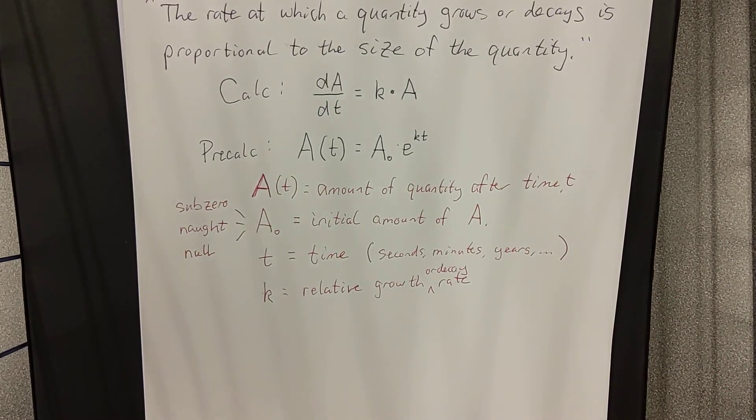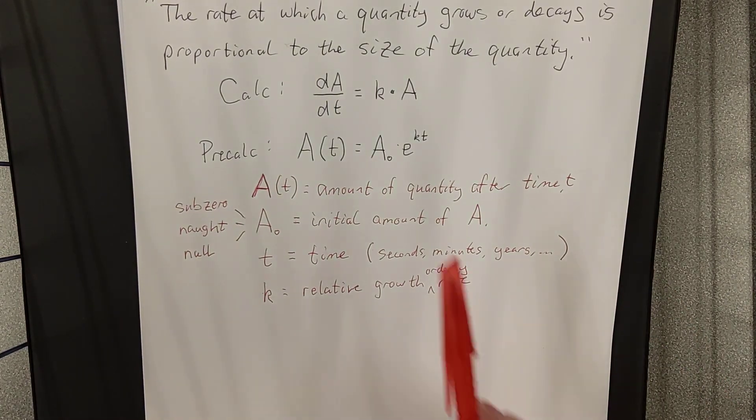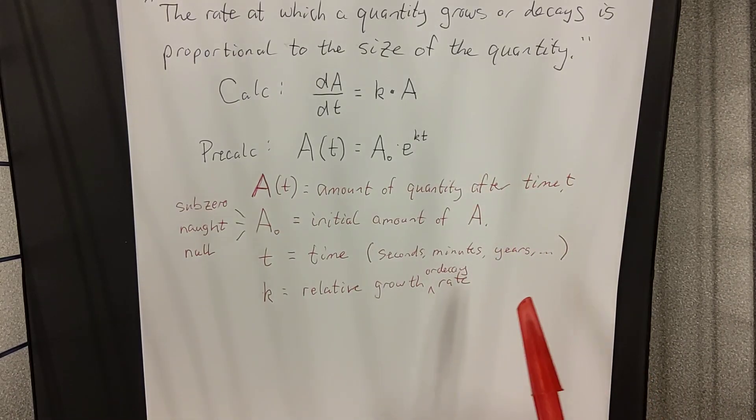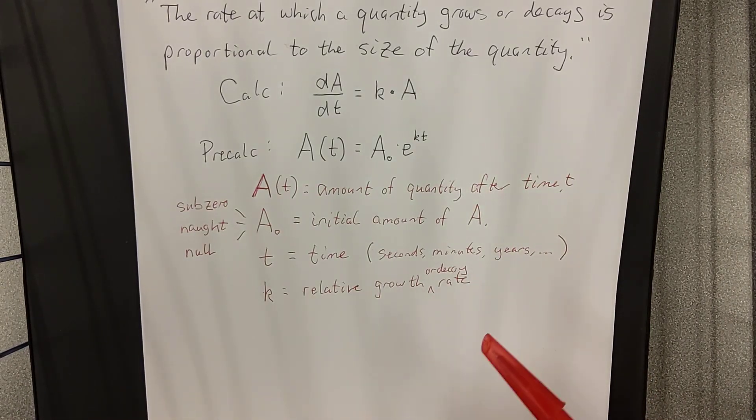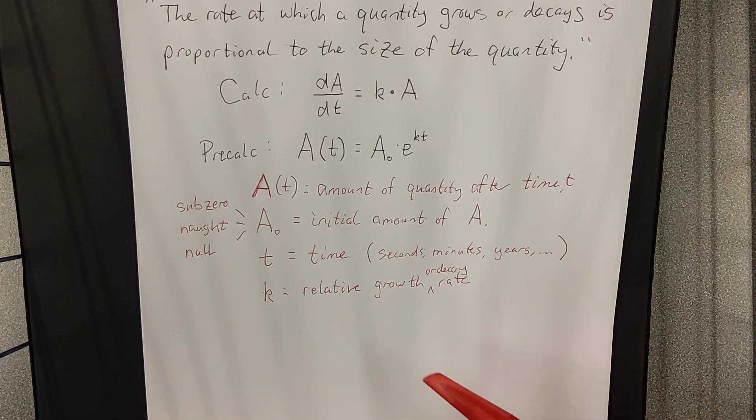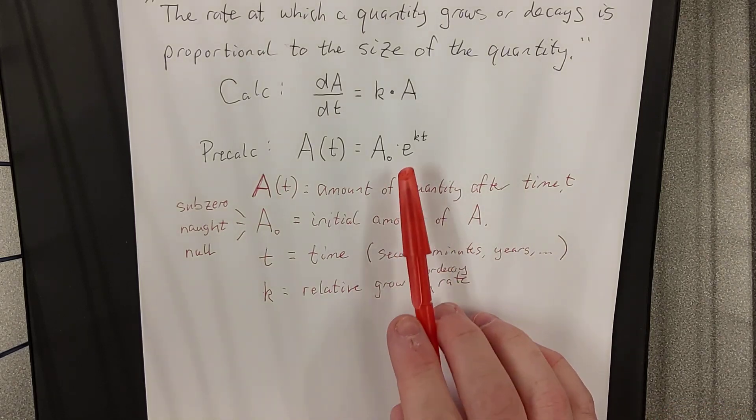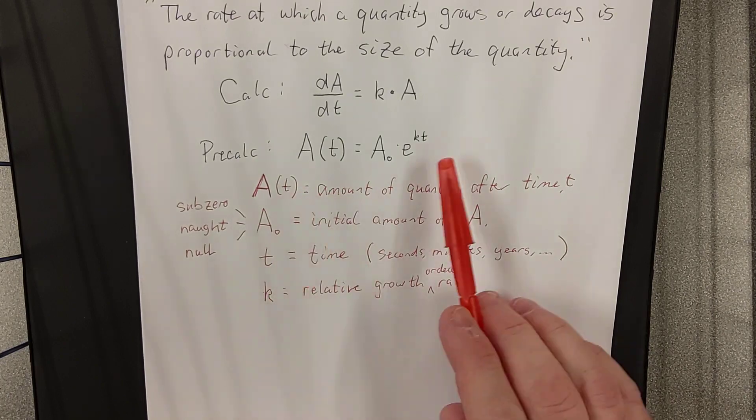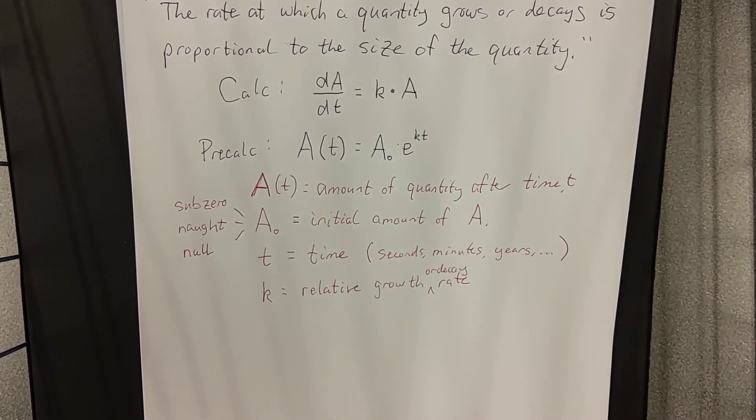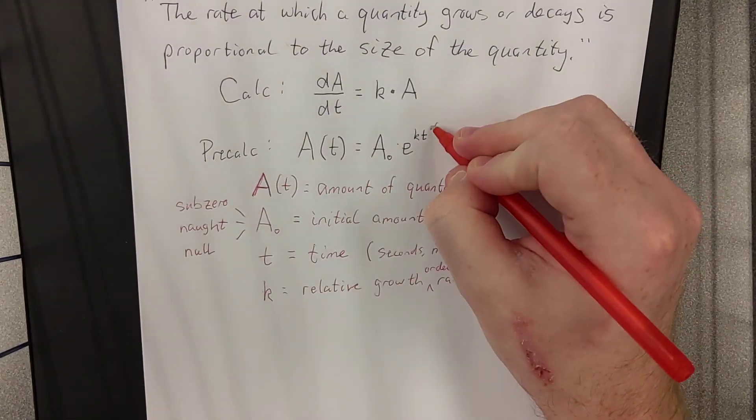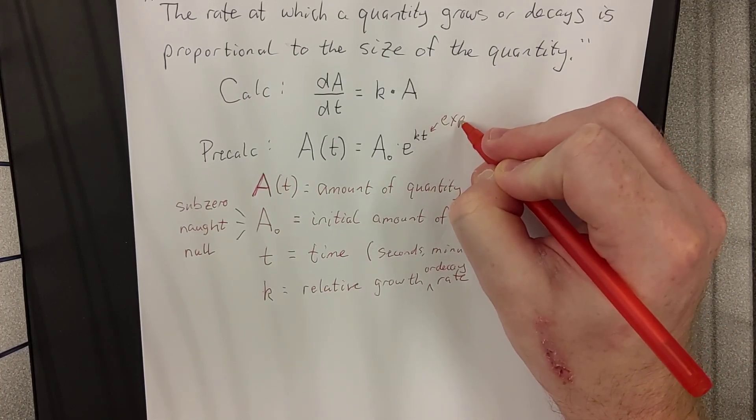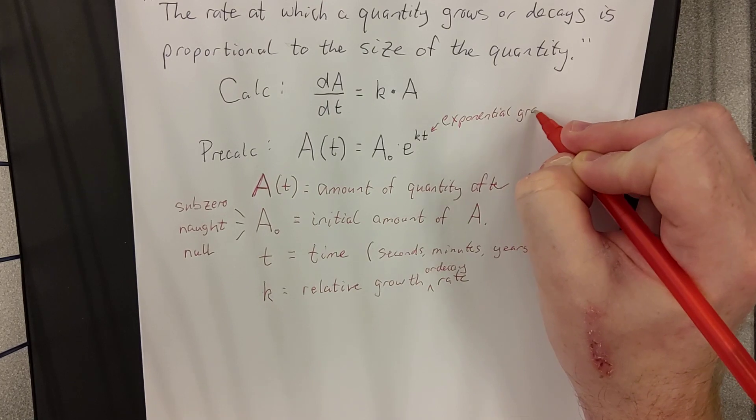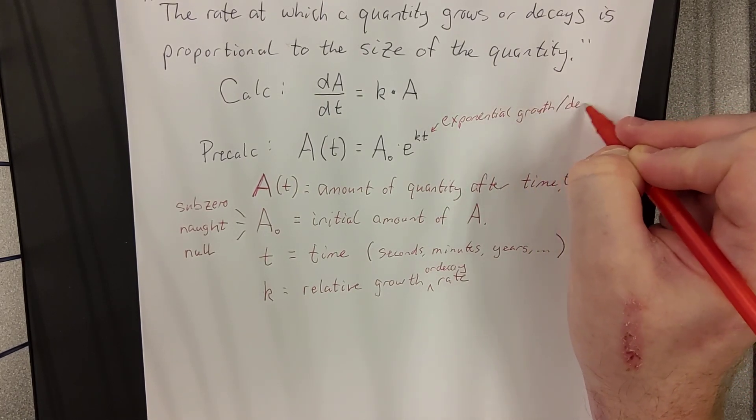Because this thing could be growing or decaying. Because it's proportional to the size of the actual quantity, we say that this is a relative growth rather than a linear growth or other kind of growth. This is also referred to as an exponential growth because T, being our independent variable, is located in an exponent. So, because it is in an exponent, this is why it's referred to as an exponential growth or decay.